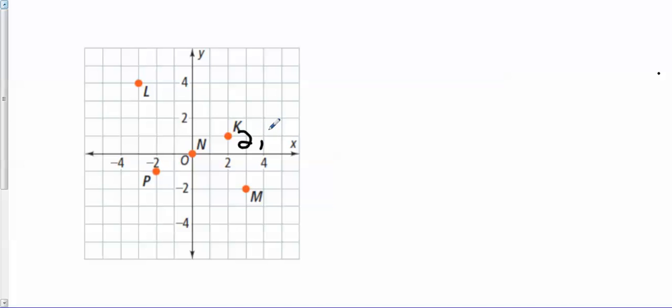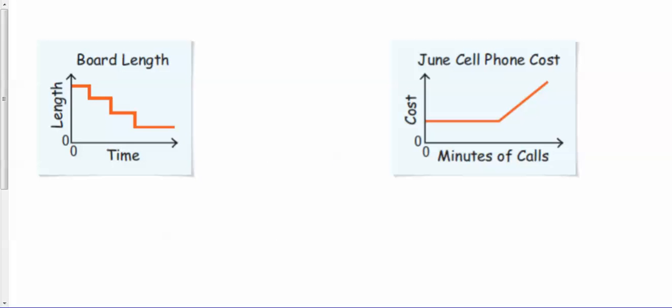Point N would be at the origin, 0 comma 0. Then you got point P which is negative 2 comma 1. Point L, let's see, you go to the left three ticks, so negative 3 and up 4. And point M is to the right 3 and down 2, so that's 3 comma negative 2. Hopefully you remember those from before.